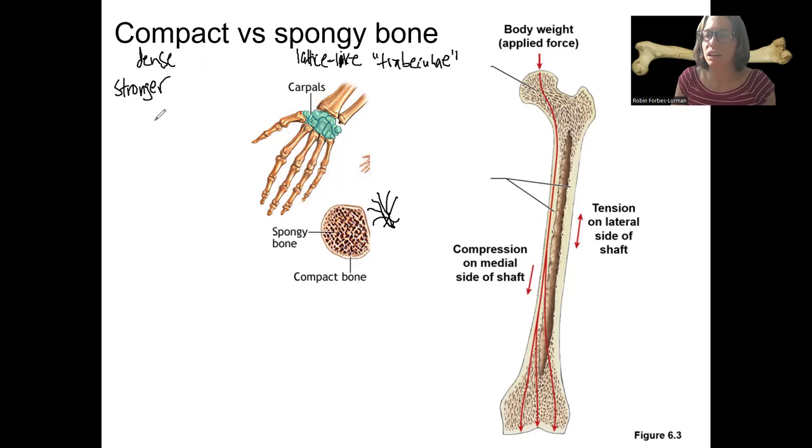Whereas spongy bone is less sturdy. It has this open spaces where there's cells and open space between those calcified trabeculae. So this part is the part that is calcified. In between the lattice, there's open space.